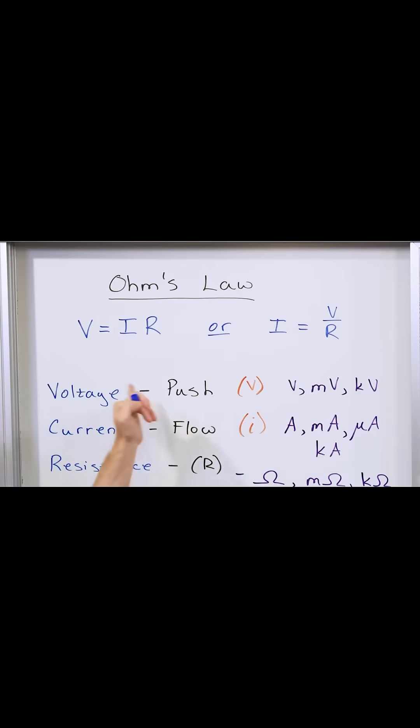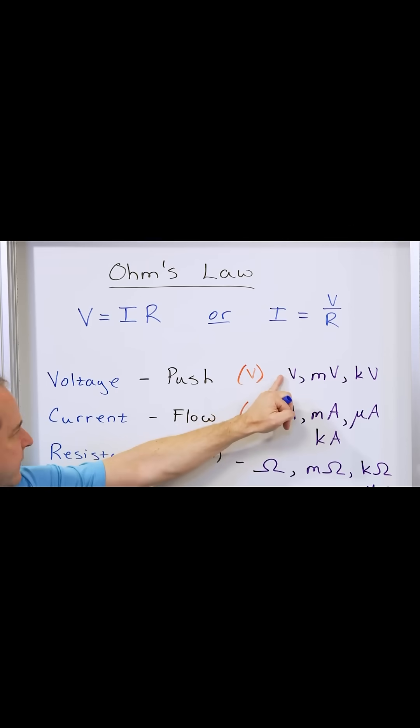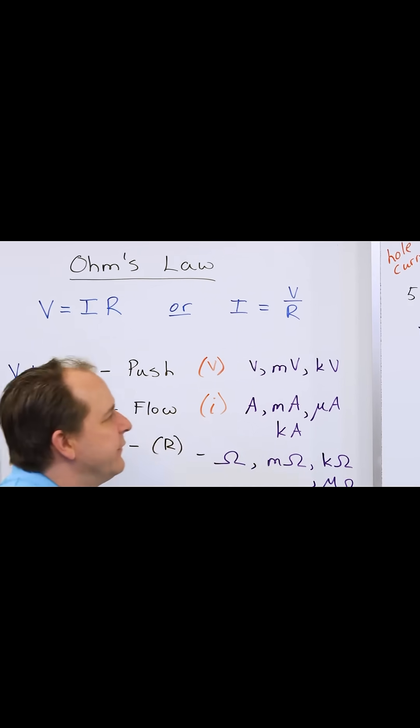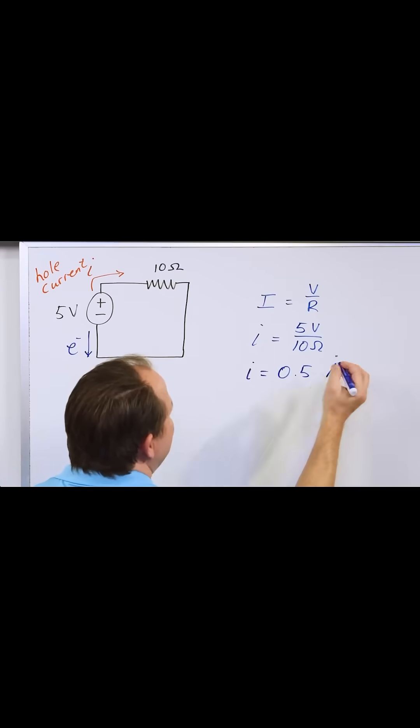What unit? Well, we already said the voltage is in volts. The ohms, the base unit is omega and ohms. And so amperes is going to be the base unit. So amps.